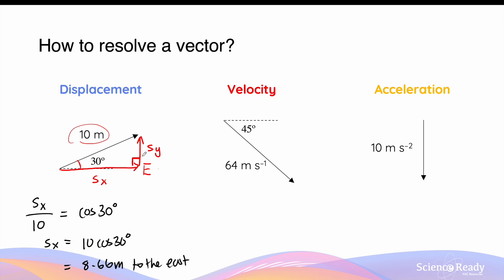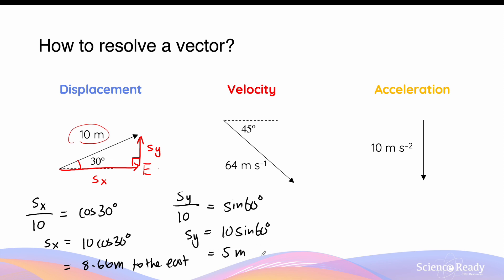The vertical component is the opposite side to the 30 degrees. So Sy divided by the hypotenuse is equal to sine 60 degrees. So Sy is equal to 10 sine 60 degrees, which is 5 meters to the north.